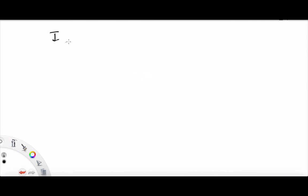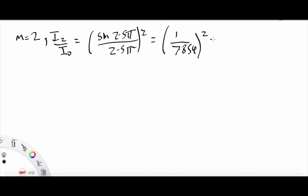And then very quickly for M equals 2, we have I2 over I naught. And that is sin of 2.5 pi over 2.5 pi squared comes to 1 over 7.854 squared equals 0.0162, which is about 1.6%.